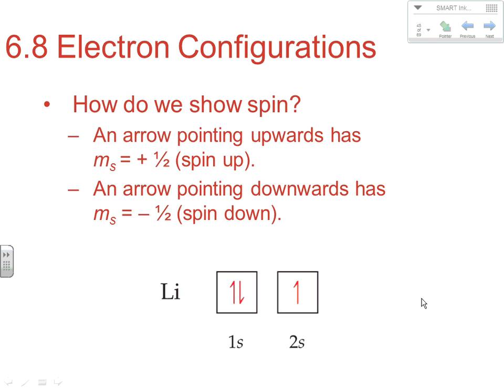How do we show spin? One of the most common ways is with up and down arrows. The first one in we always call our up spin — that's our positive one-half. So the first electron is our positive one-half m-sub-s, and the second electron is our negative one-half m-sub-s.